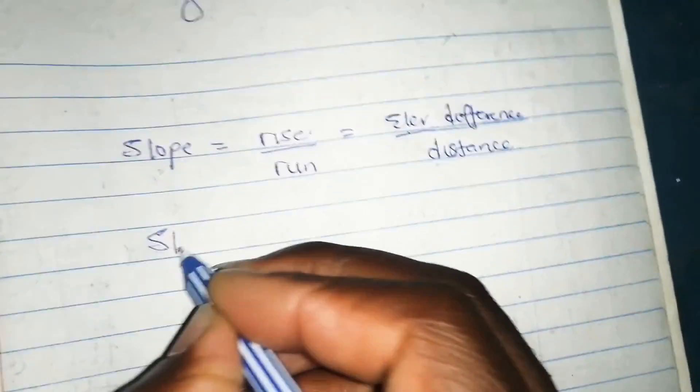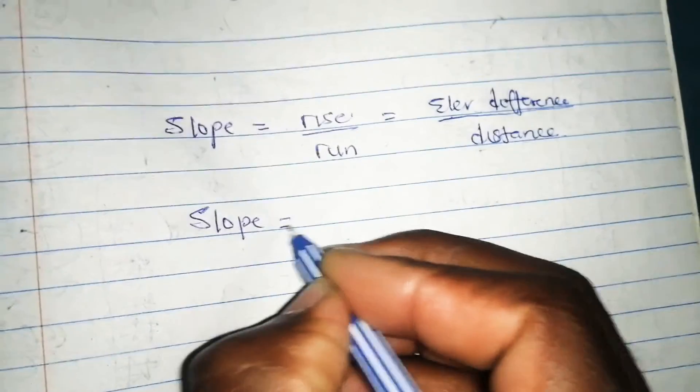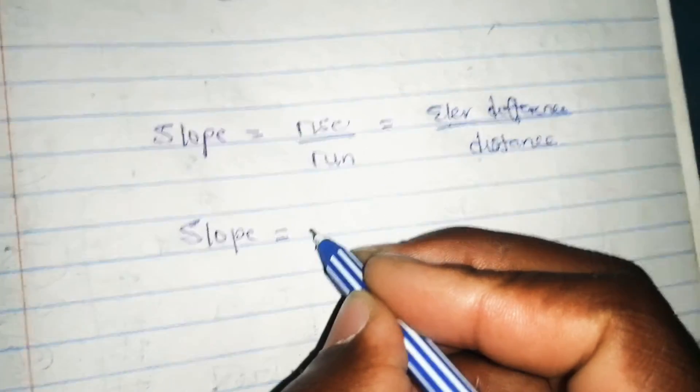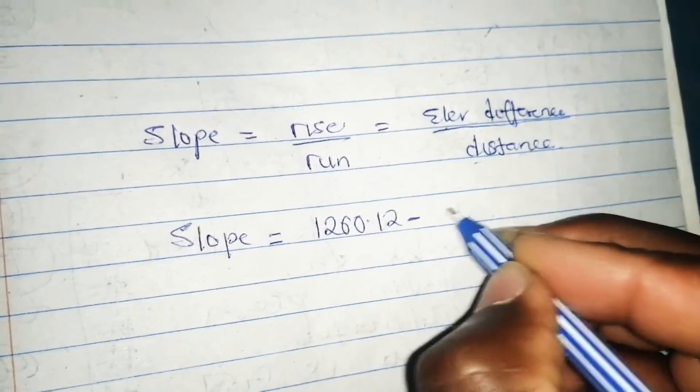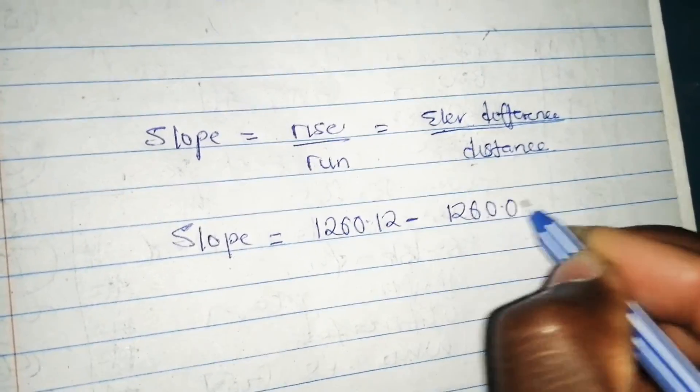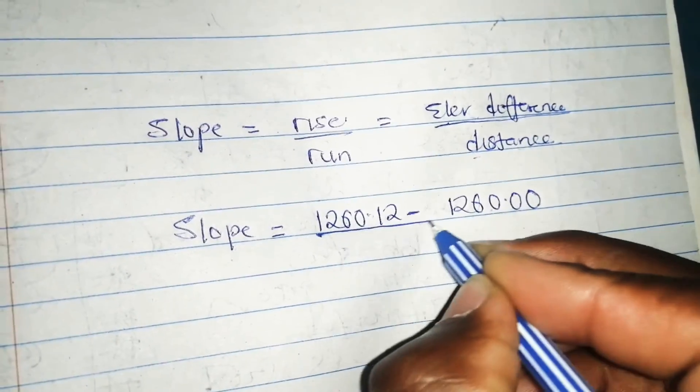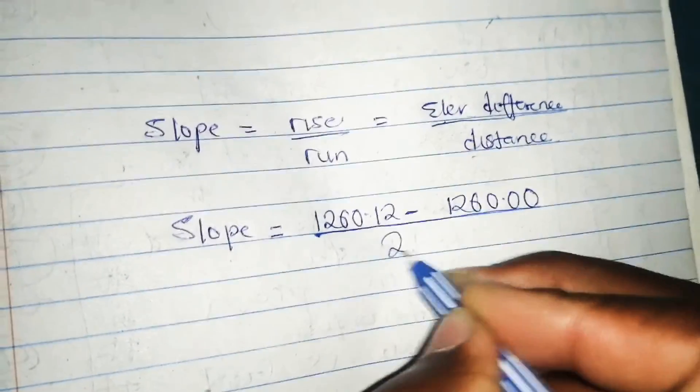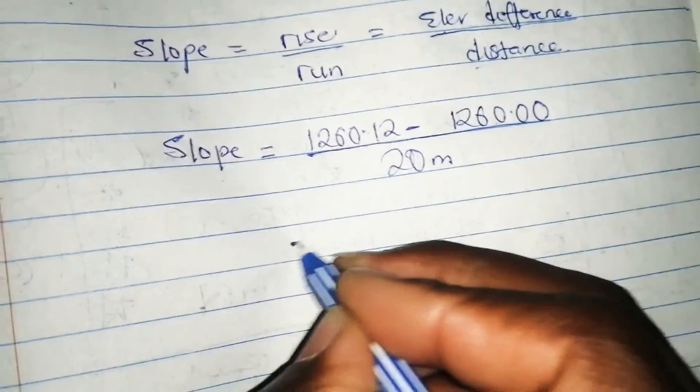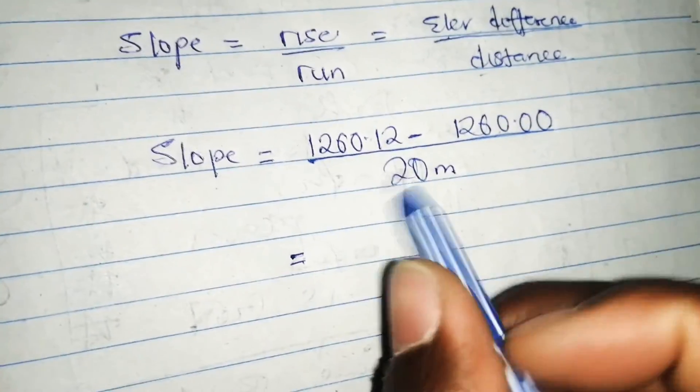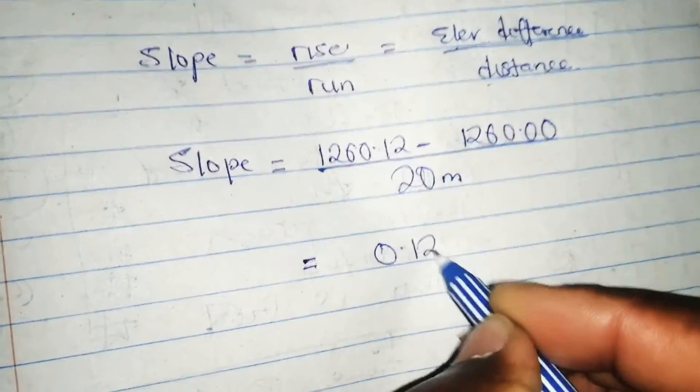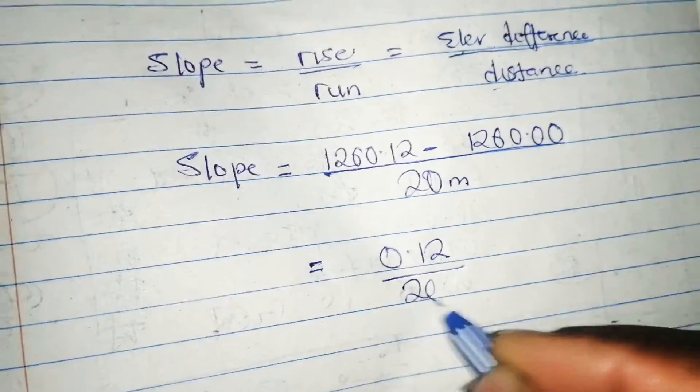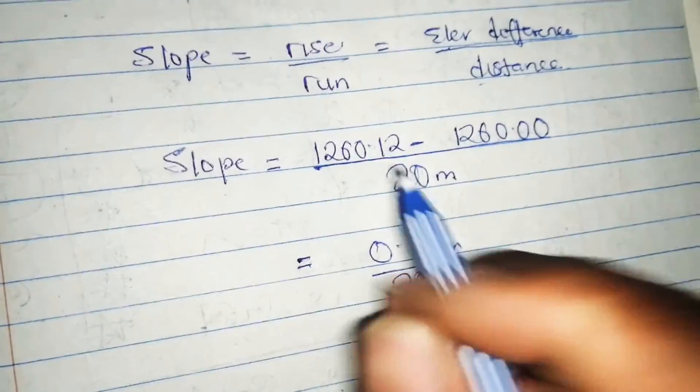In this case, slope equals the elevation difference between two points: 1260.12 minus 1260.00, over the distance which is 20 meters. So slope equals 0.12 over 20 meters. Both of these are in meters, don't forget.